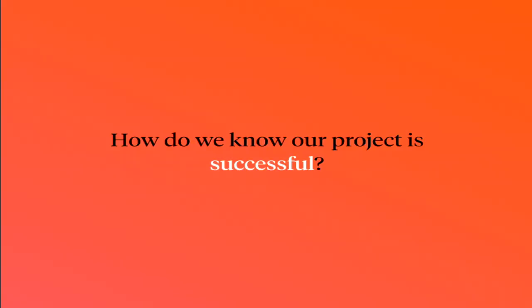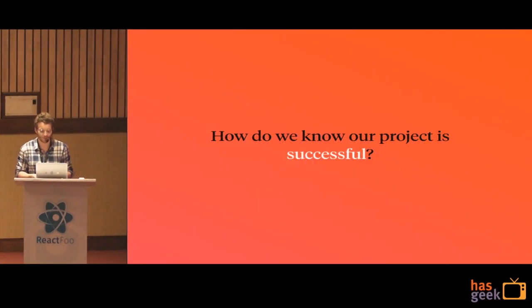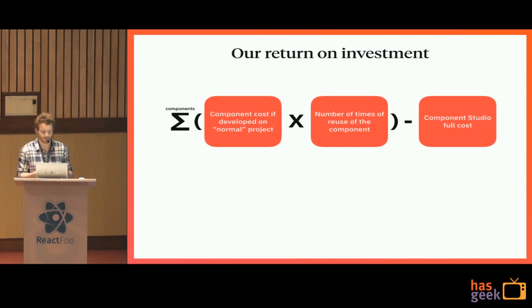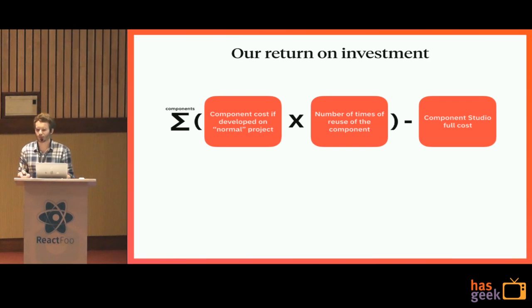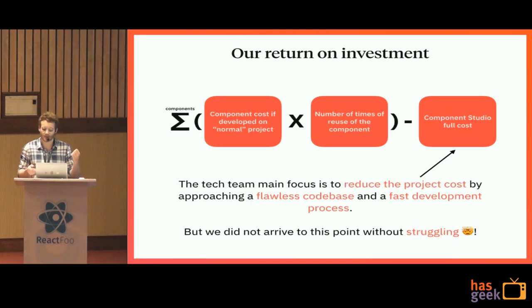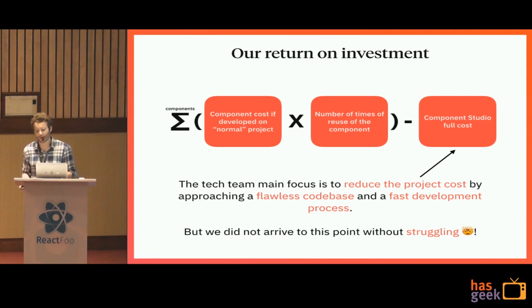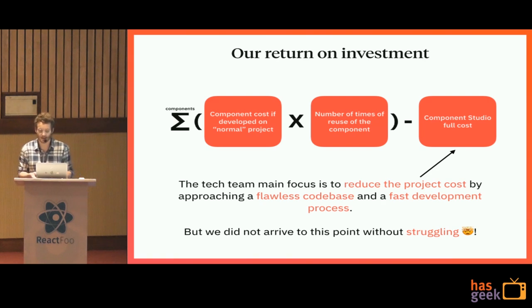How do we know the project is successful? Even as tech people, we need to convince business managers to fund such projects. Our ROI formula is simple: the cost it would have taken to redevelop each component on a normal project, times the number of times it's been reused, minus our full project cost including contributor time. As a tech team, our main focus is on the right side — reducing project cost by making it faster, easier, and more robust to develop with as few bugs as possible.